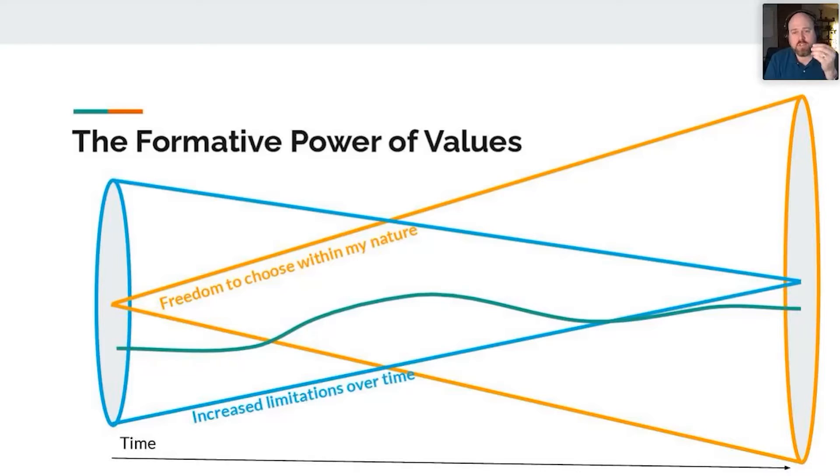They start saying, I'm going to make different choices day by day about who I am and how I show up. So they create a different path, and it's not a perfect path, but they're able to make choices.